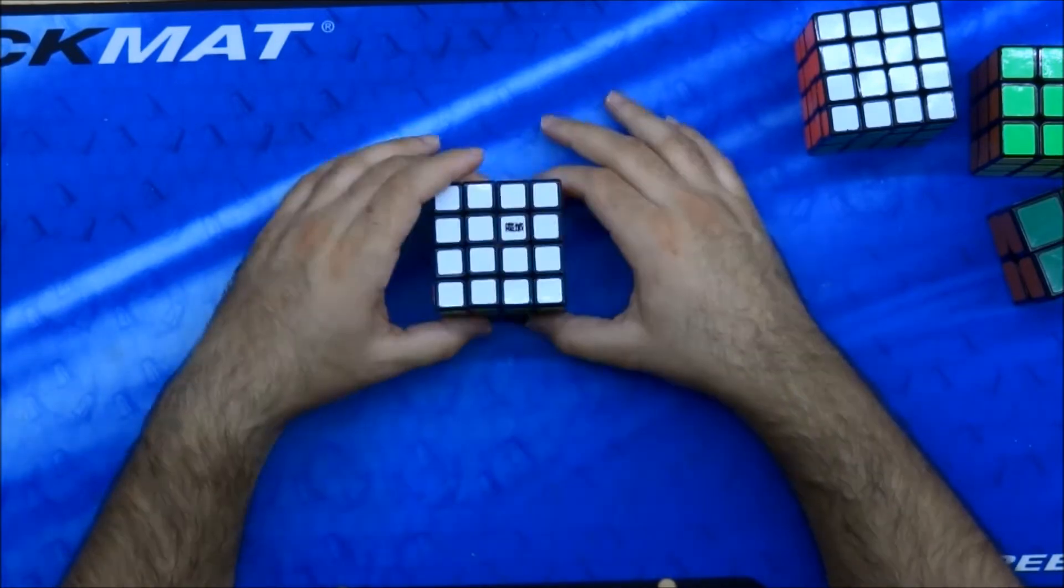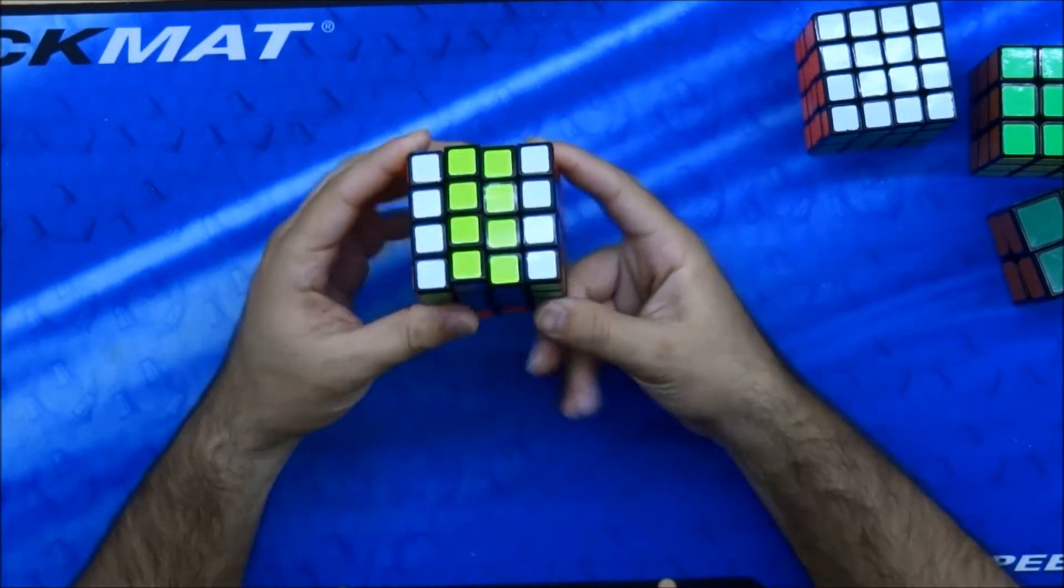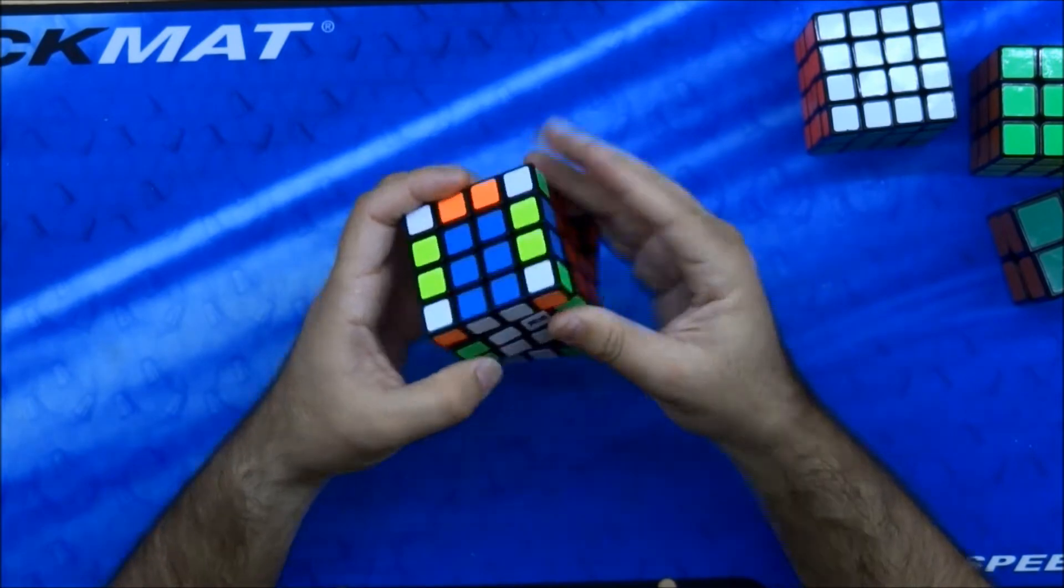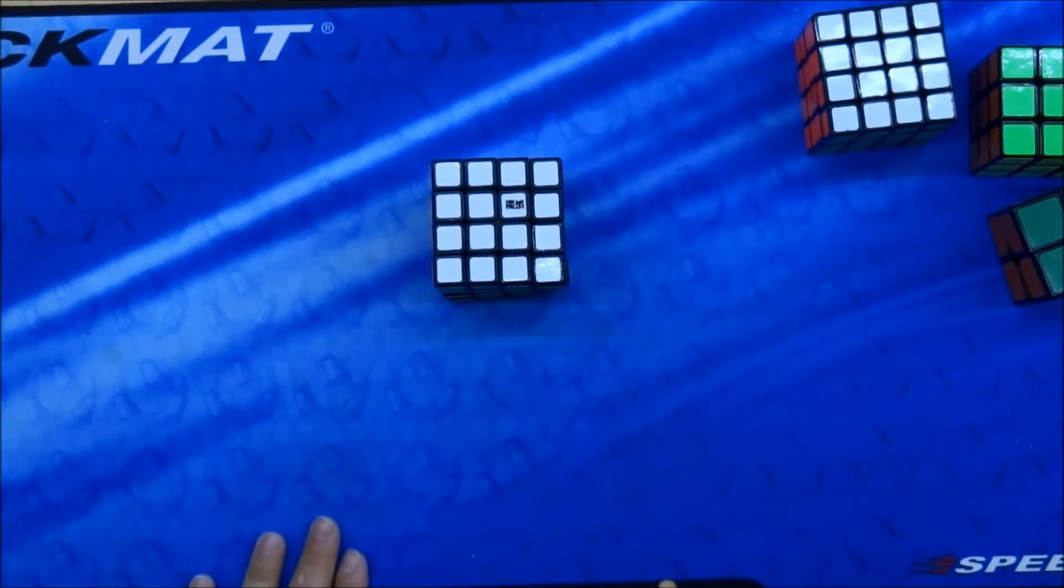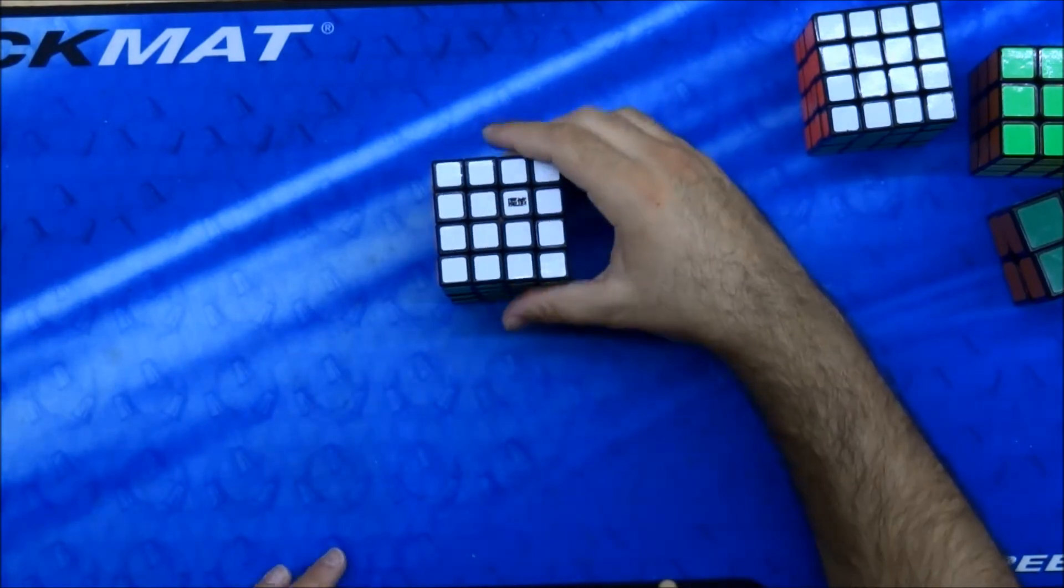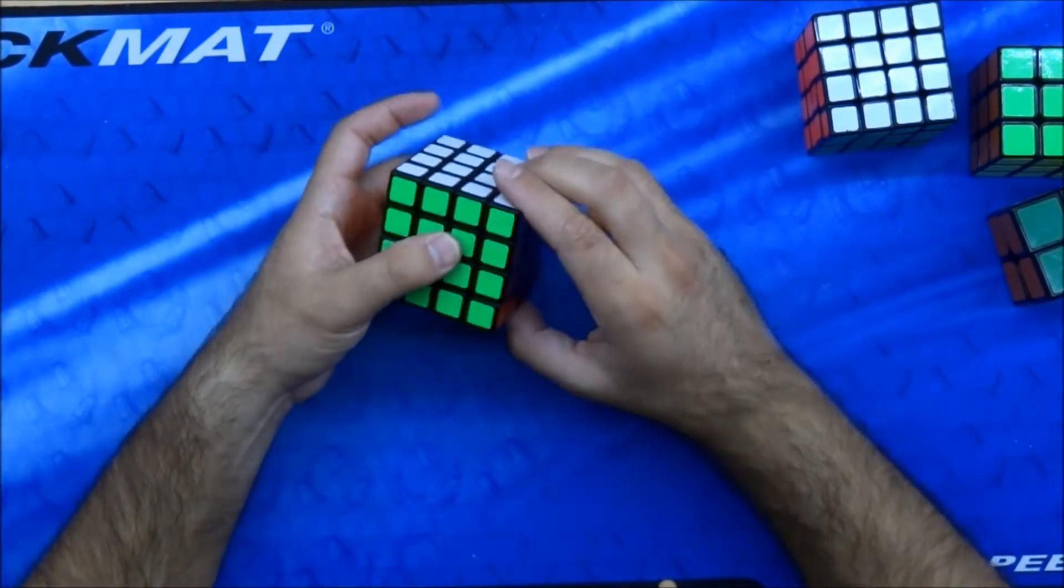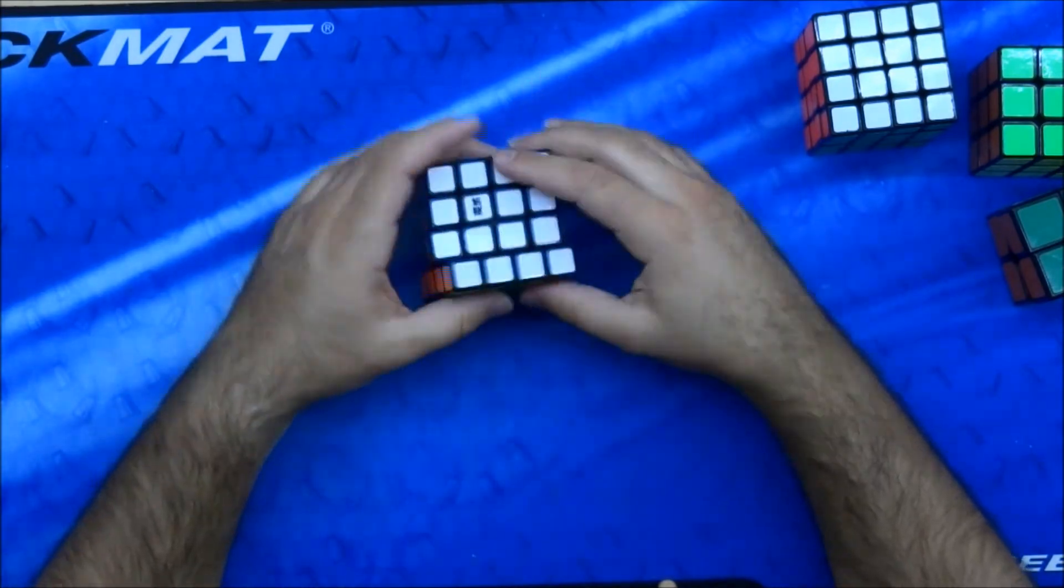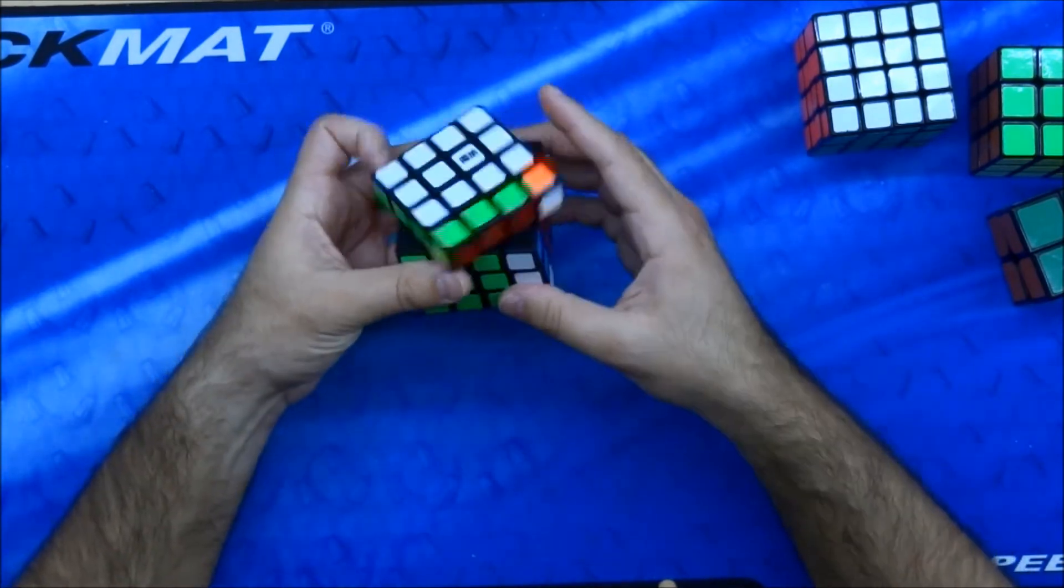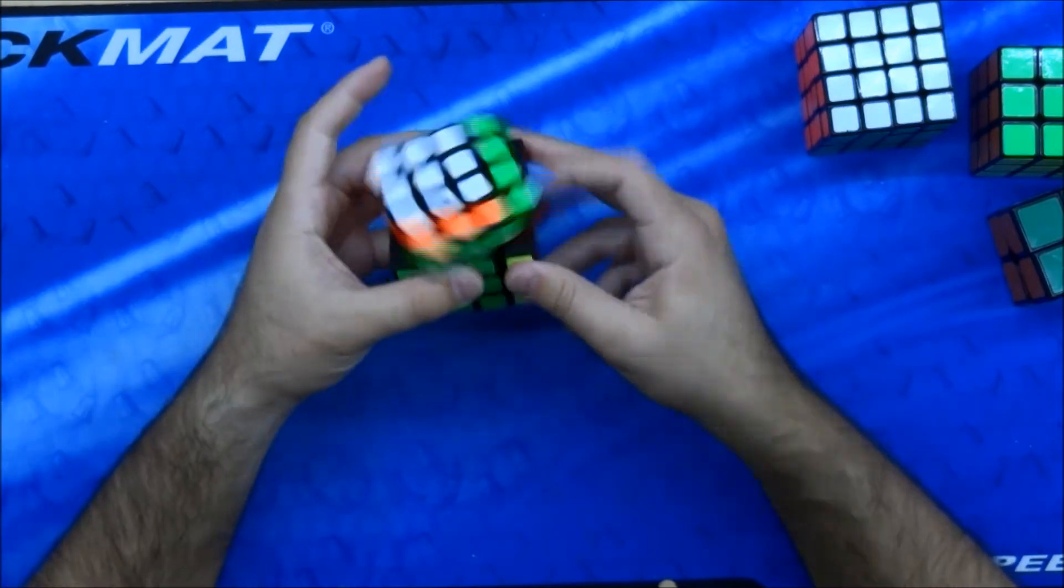I know I do the U-perm a little bit different, and on the 3x3 it's not a problem for me, only in the 4x4. So it turns pretty good. It does need a little bit of lube and tensioning, so it will be perfect.